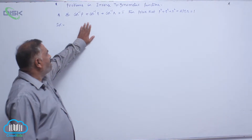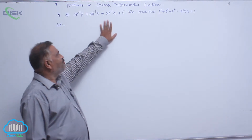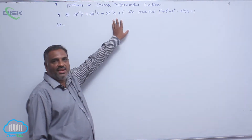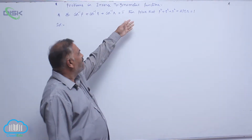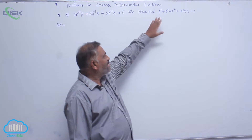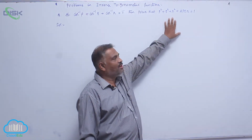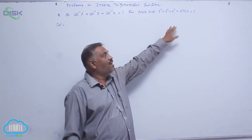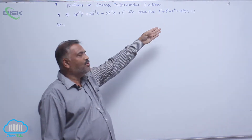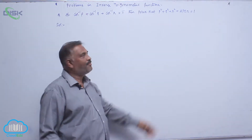If cos inverse P plus cos inverse Q plus cos inverse R equals pi, then prove that P squared plus Q squared plus R squared plus 2PQR is equal to 1.